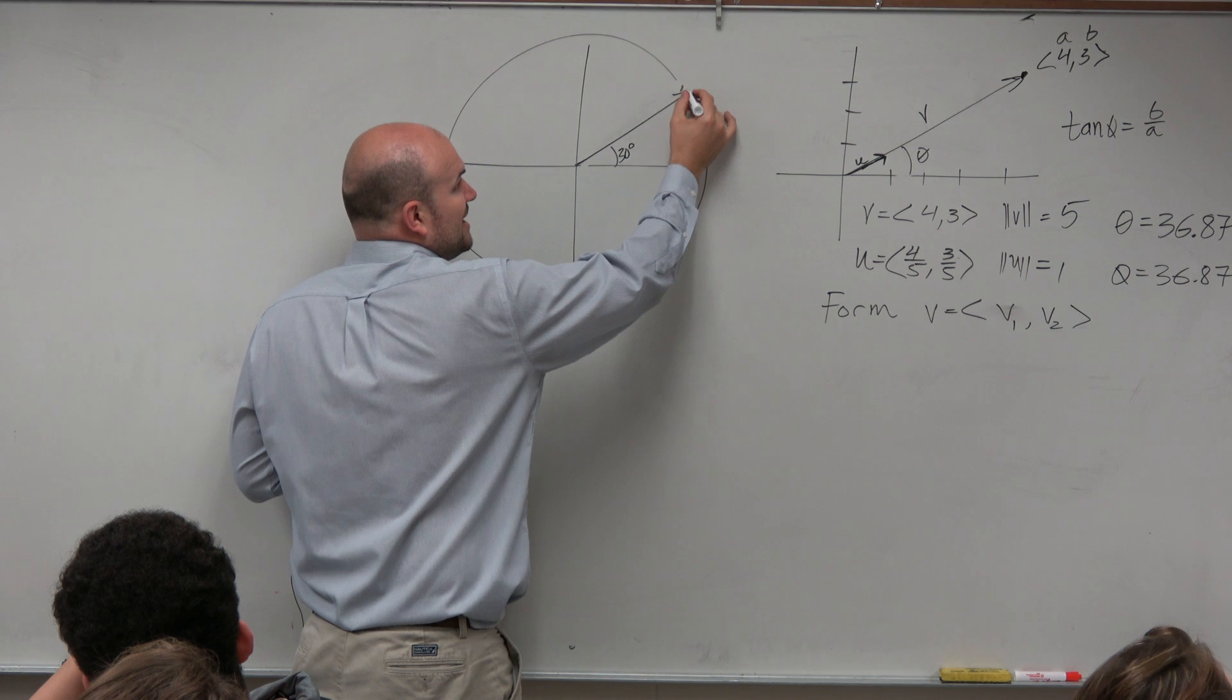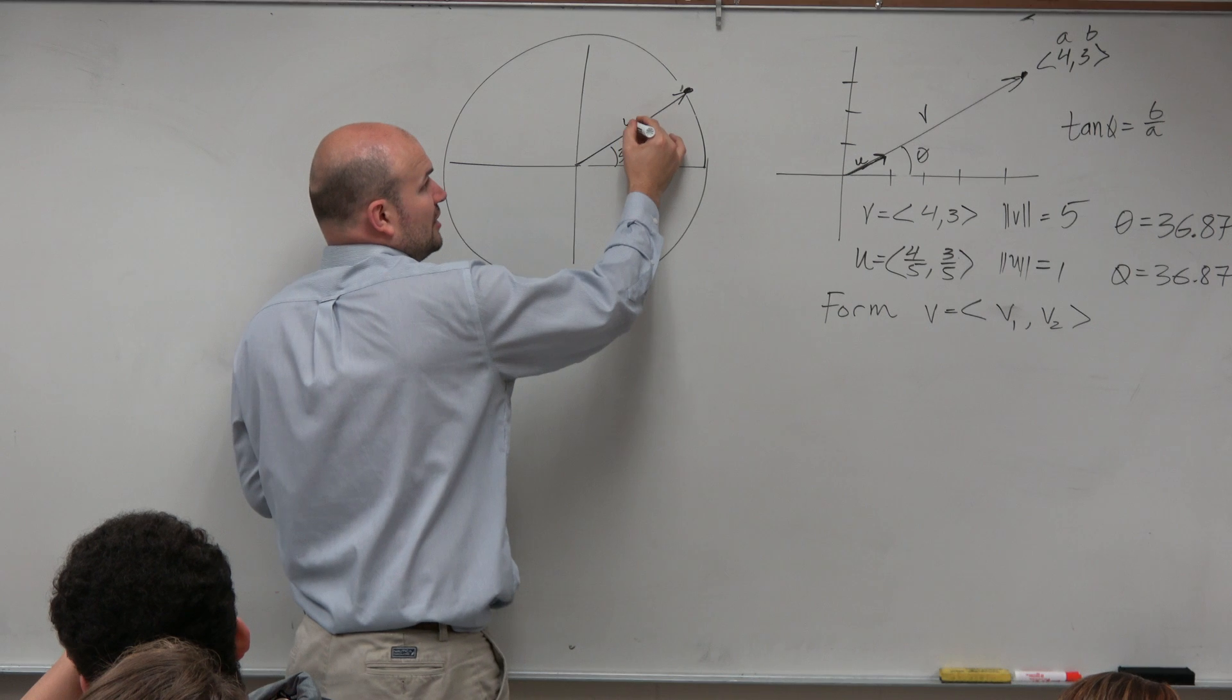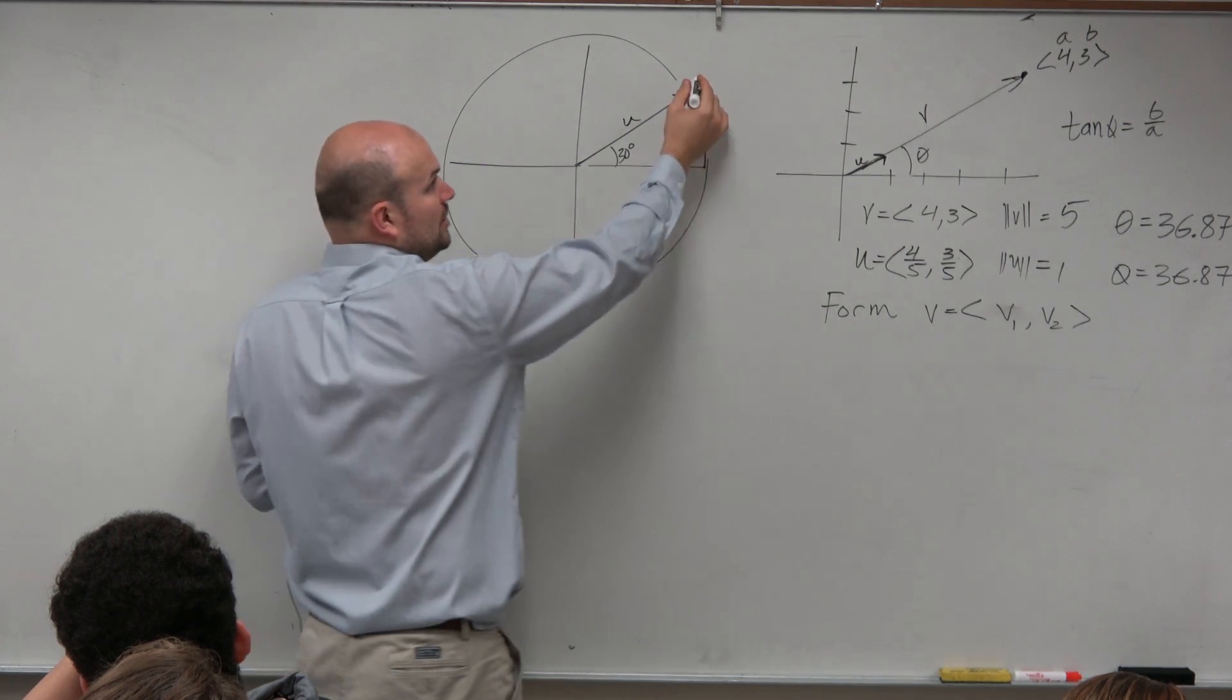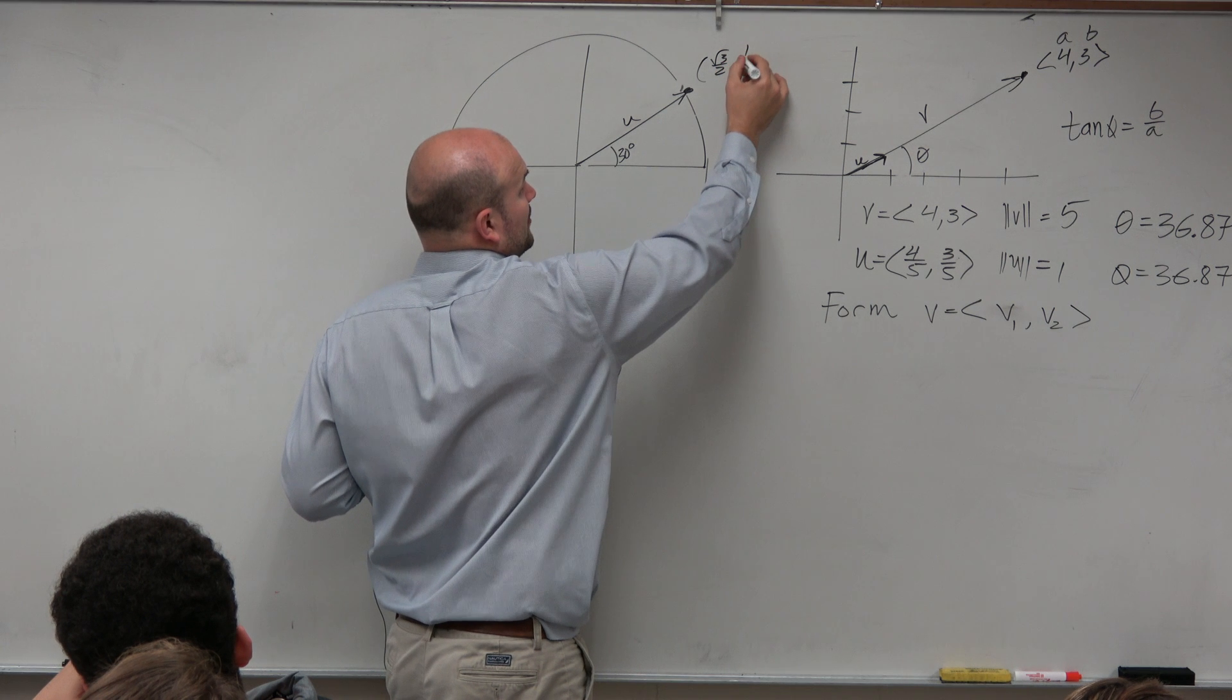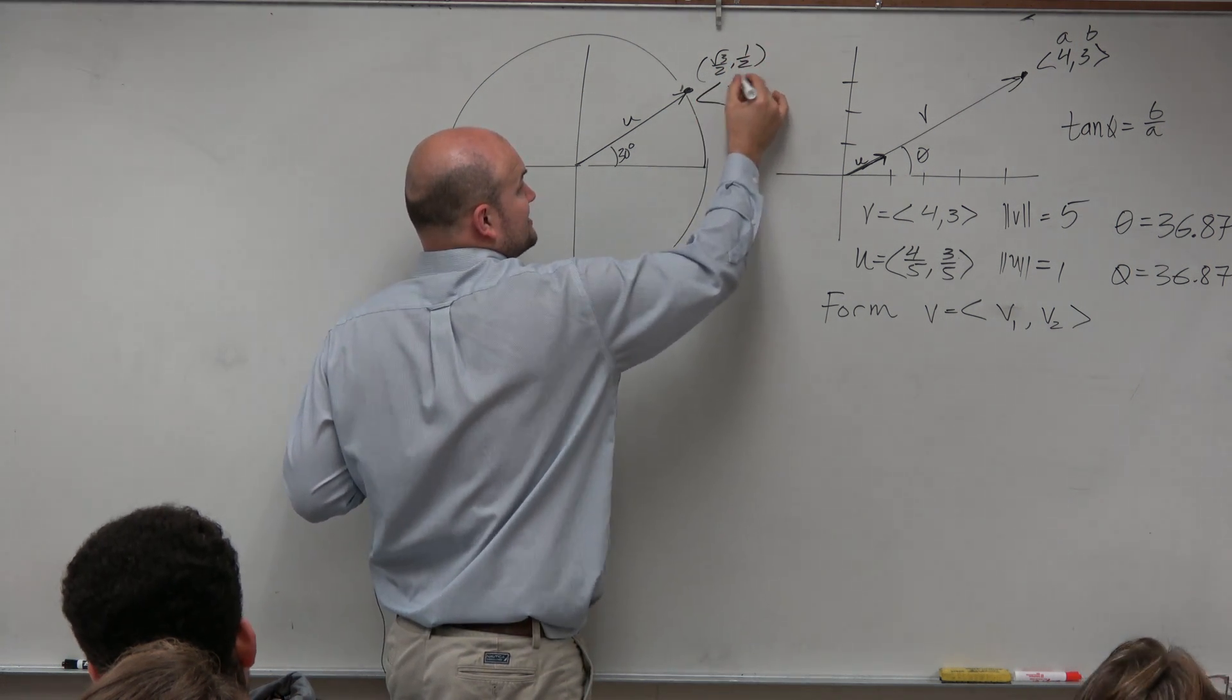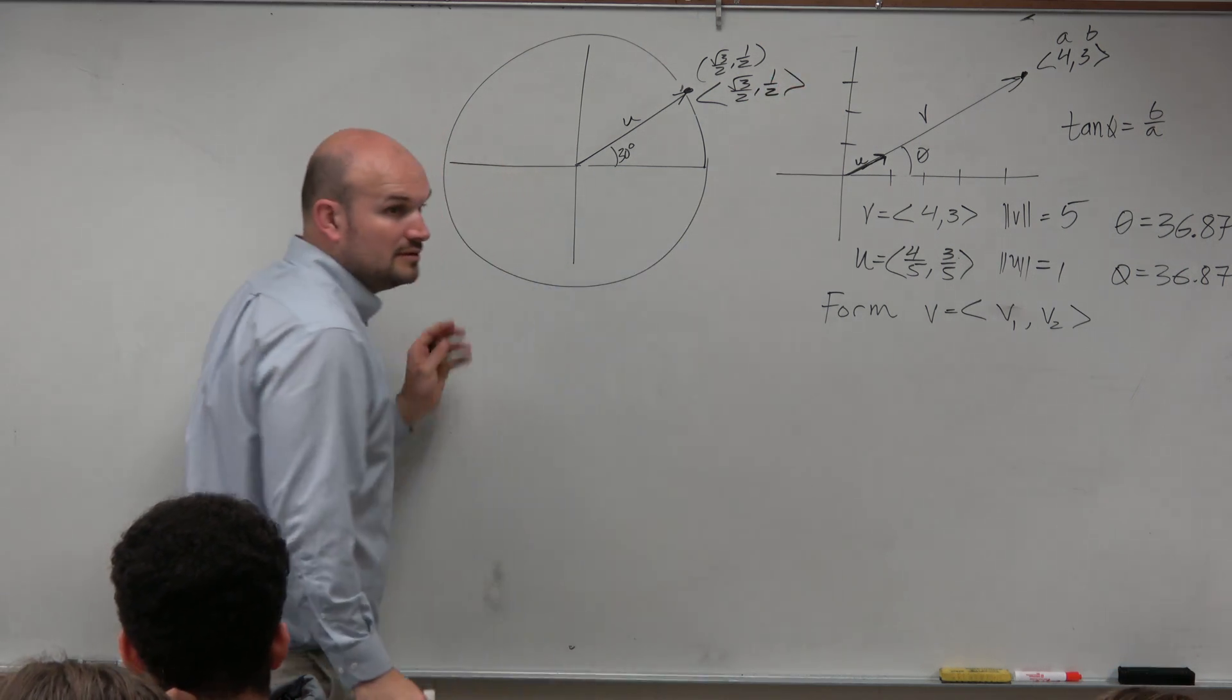If we were going to make a vector for this, if we were going to compose this, or have this, let's call this our new unit vector, we know the coordinate point here is square root of 3 over 2, comma, 1 half. So if I wanted to write this as a vector, I would say square root of 3 over 2, comma, 1 half.